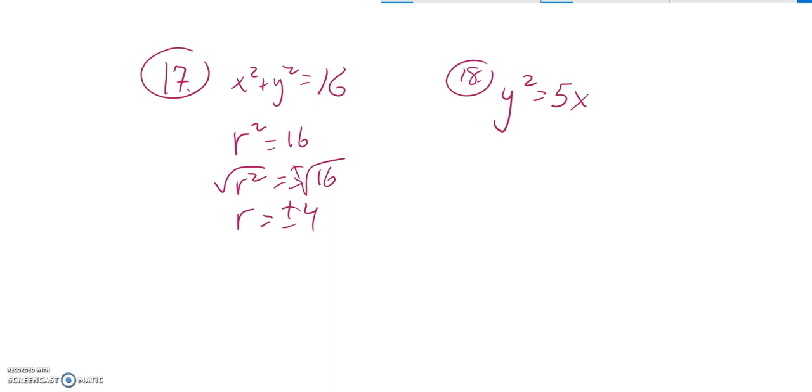And since it's just a radius, I don't need the plus or minus. So r is equal to 4. Alright, that is 17.